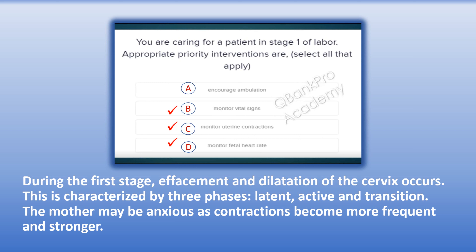The correct answers are B. Monitor vital signs, C. Monitor uterine contractions, and D. Monitor fetal heart rate. Explanation: During the first stage, effacement and dilatation of the cervix occurs. This is characterized by three phases: latent, active, and transition. The mother may be anxious as contractions become more frequent and stronger.